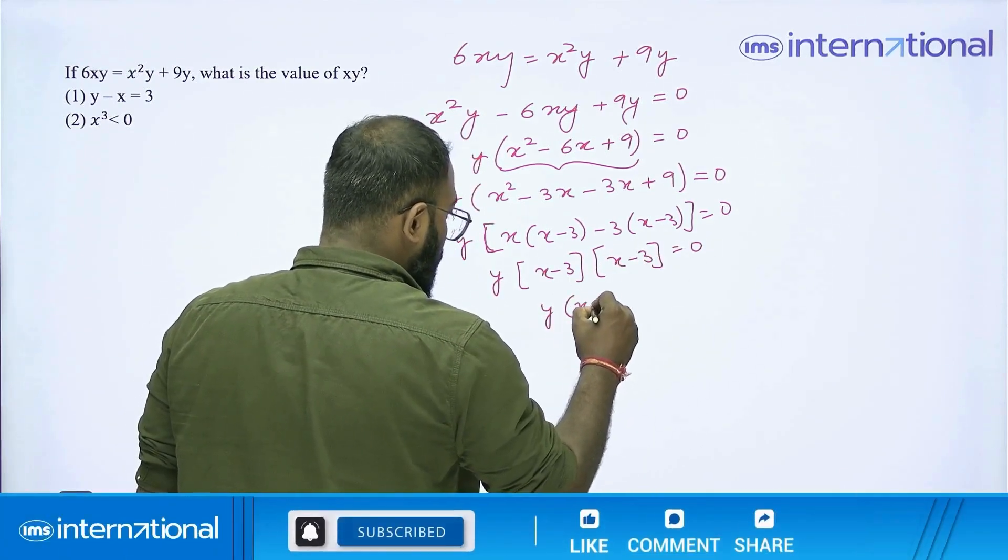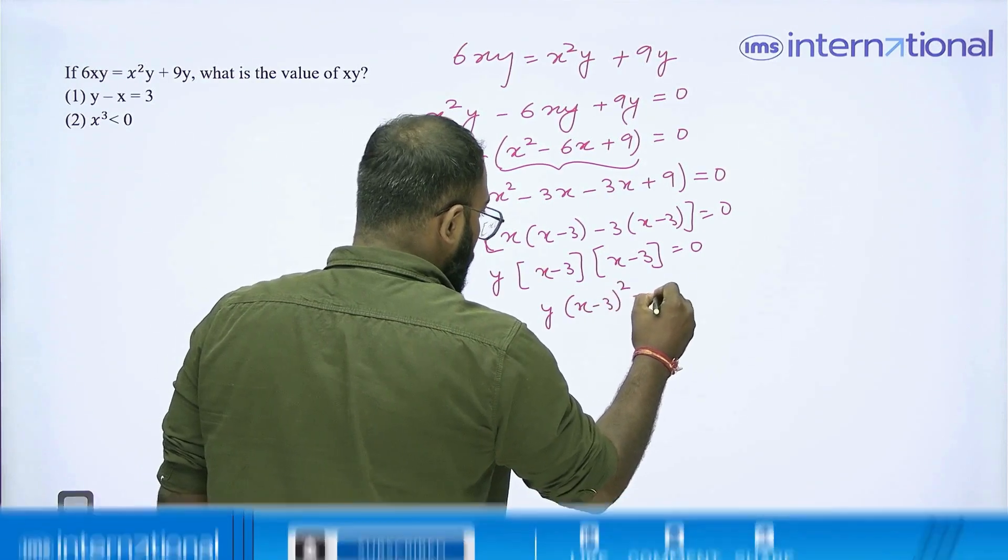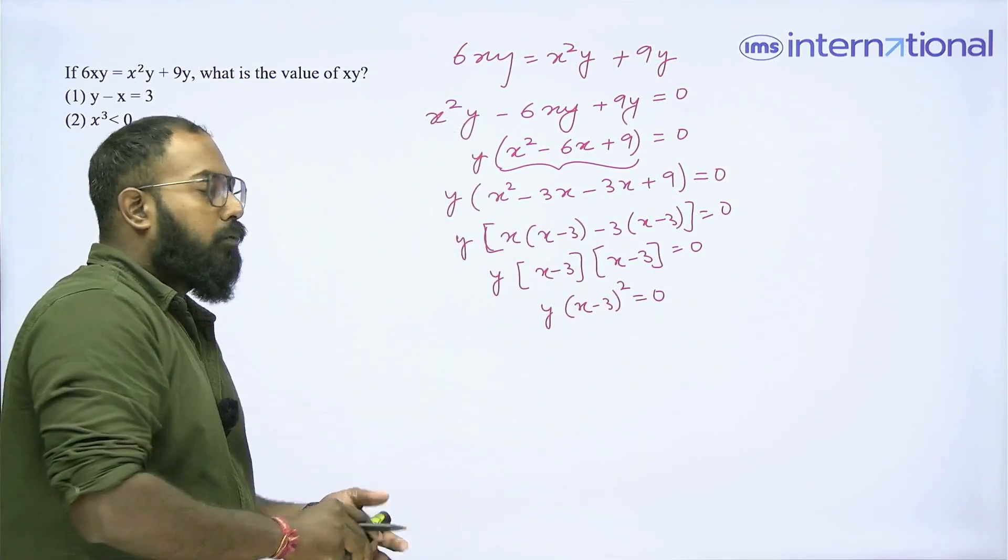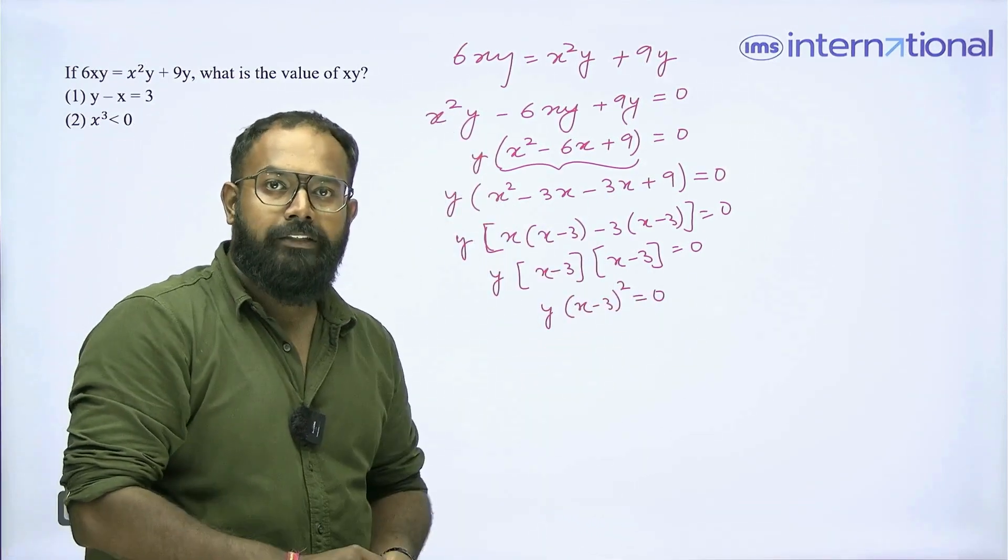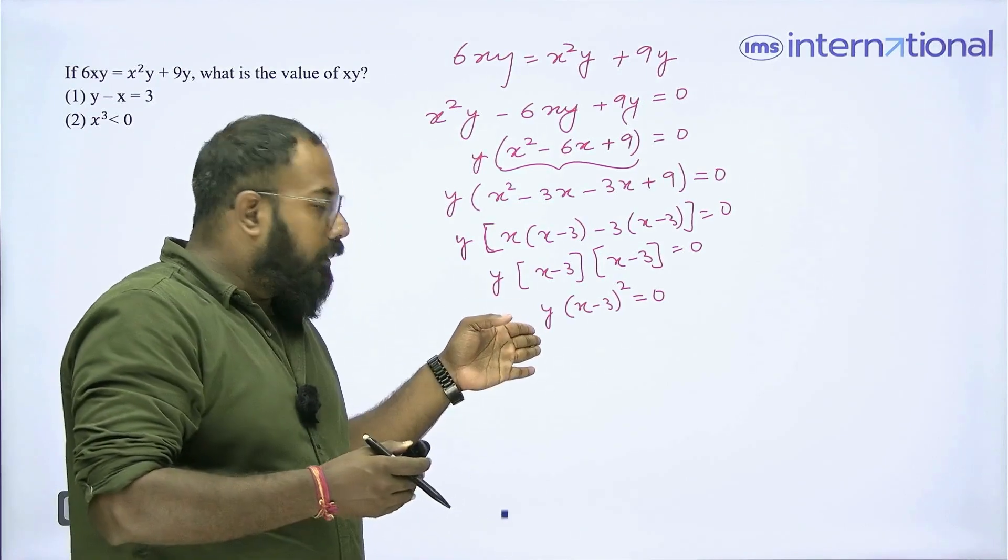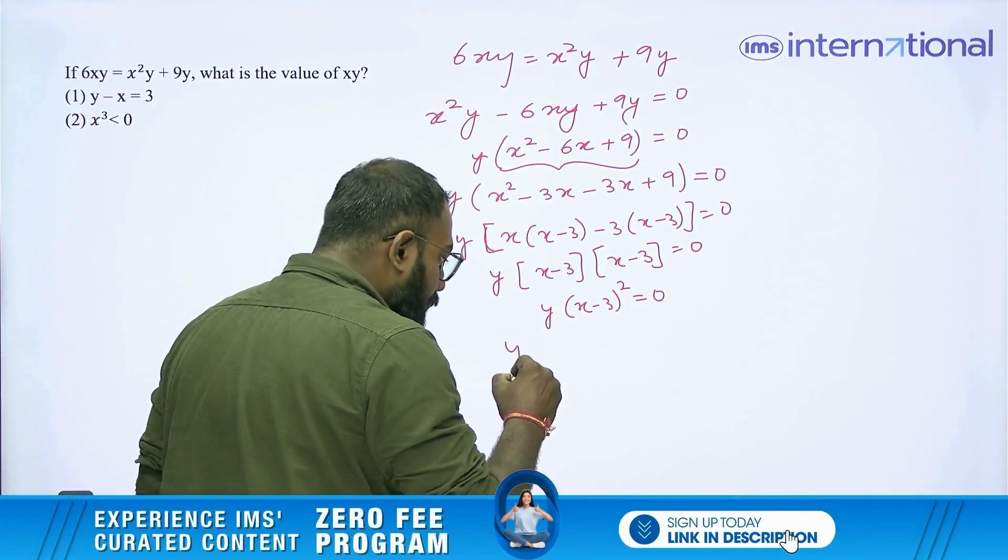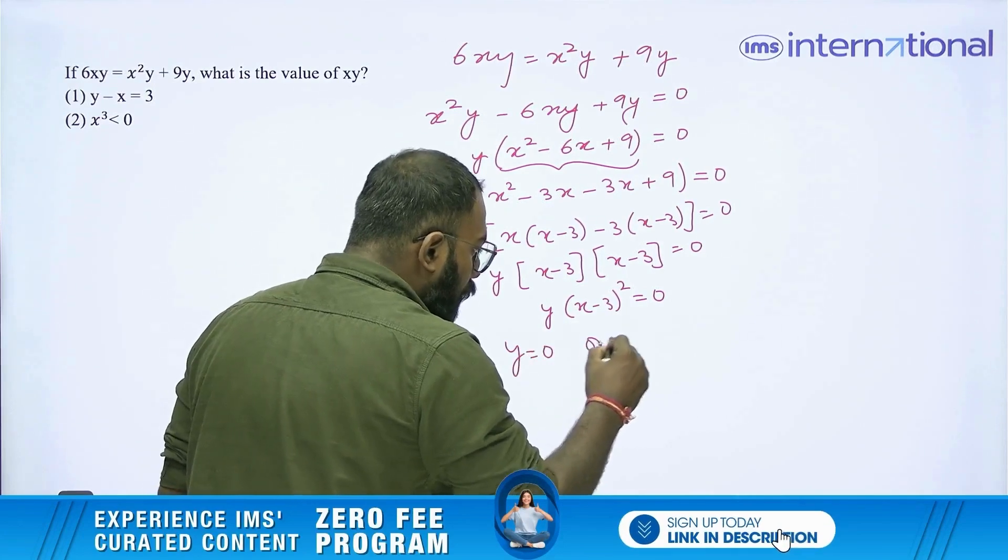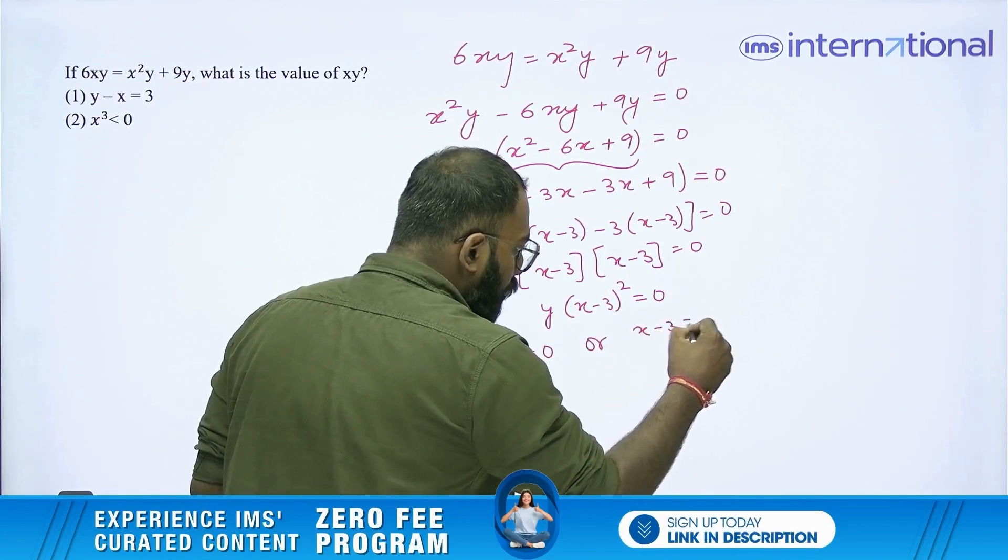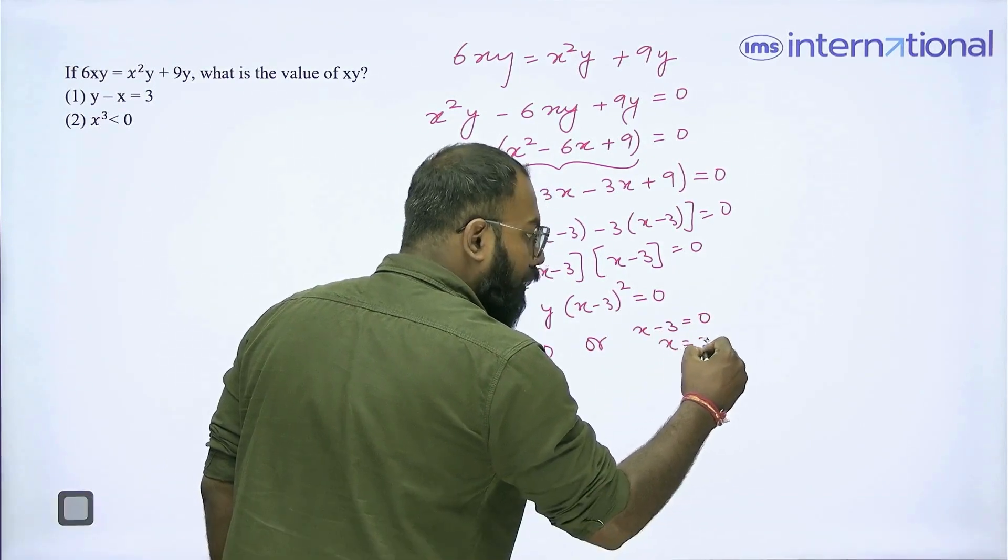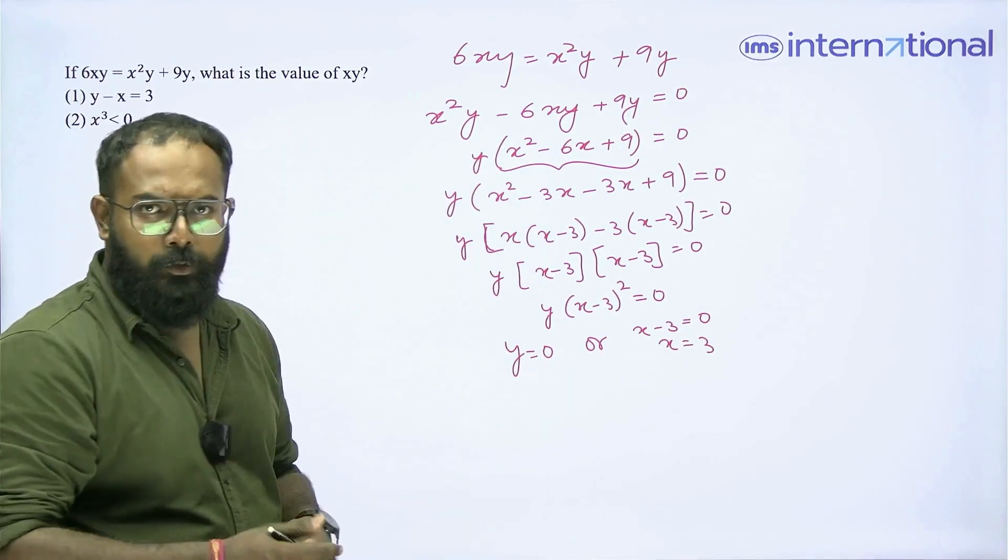That means, y times (x - 3)² = 0. Now product of 2 terms is equal to 0, that means either one of the term is 0 or both of the terms are 0. So, that means either y = 0 or x - 3 = 0, that is x = 3 or both of them are true, correct?